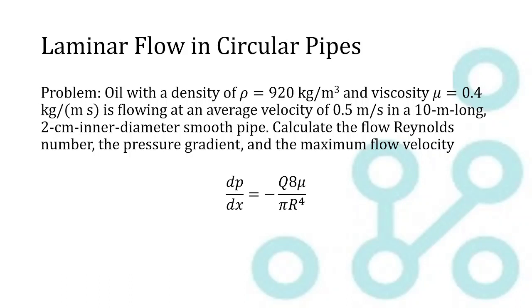So the next thing we need to calculate is the pressure gradient, dp over dx. And from the previous video, this is the formula that we have: negative Q times 8 times the viscosity, all divided by pi r to the fourth. So we can pull some of these values out of the problem statement, like the viscosity and the radius we can pull out, which is 0.01 meters. That's half the diameter.